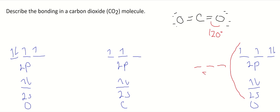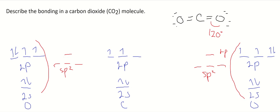These are your sp2 orbitals — there are going to be three of them. And then the one untouched orbital is going to be your 2p, the regular unhybridized 2p orbital. We'll do the same thing on the other oxygen: three sp2 hybrid degenerate mixed orbitals, and the one that's not mixed is the 2p orbital.